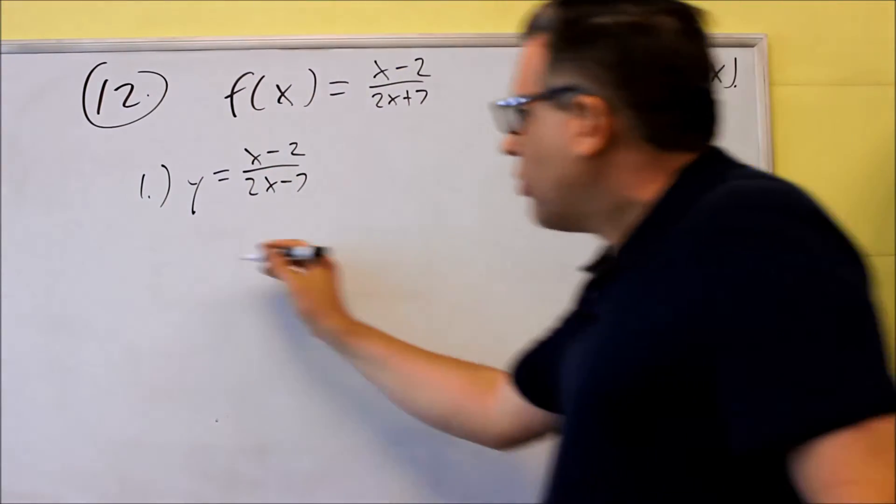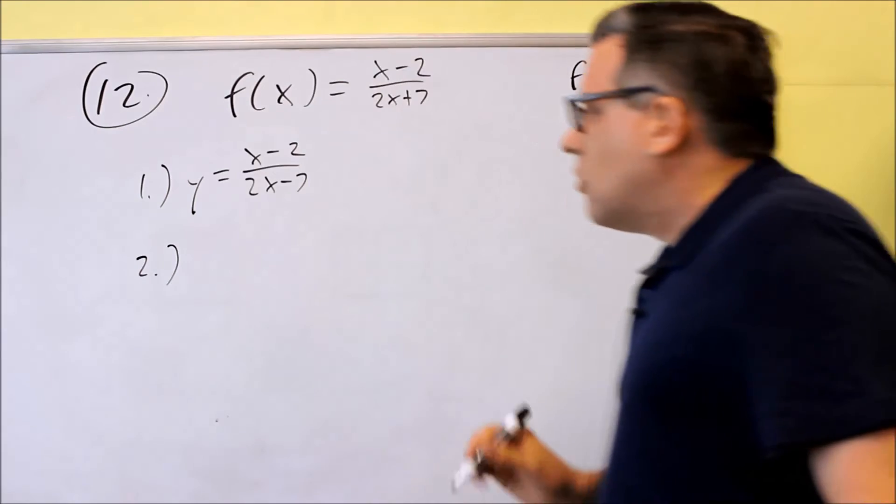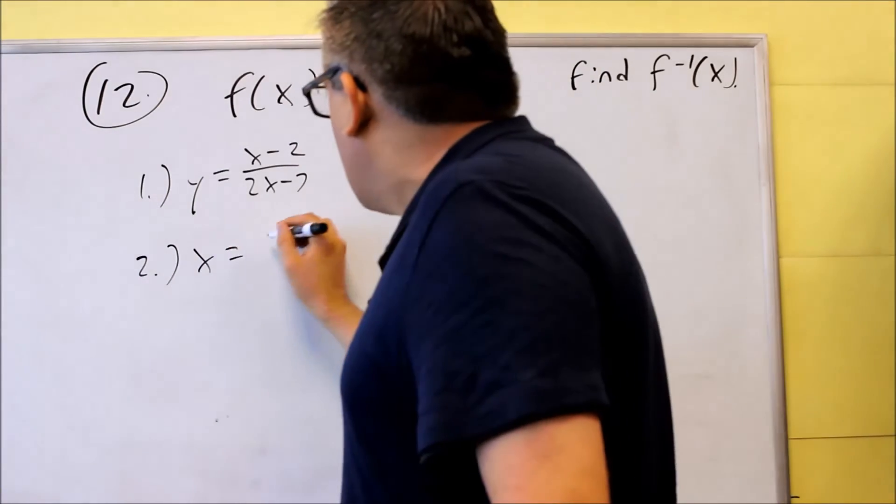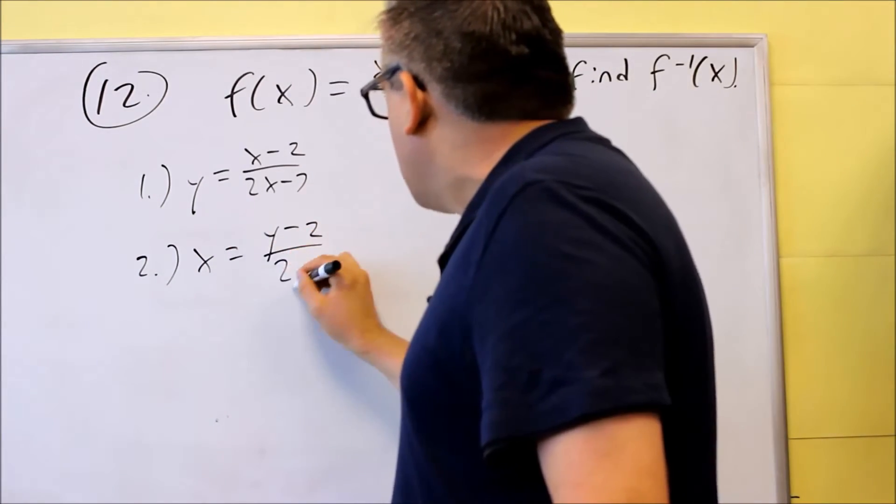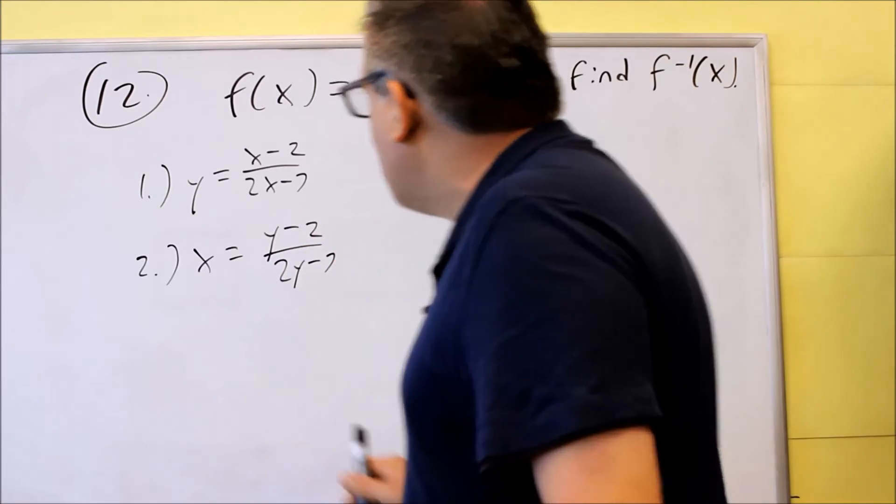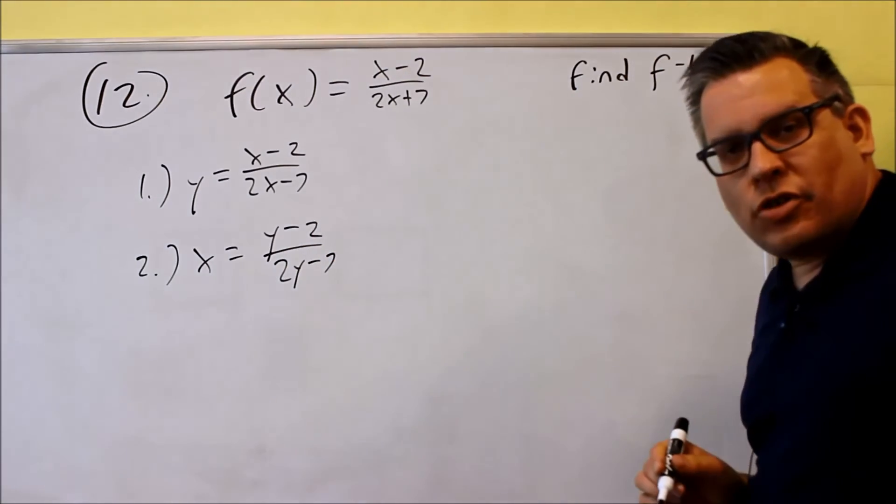Step 2, switch the x and the y. So we're going to switch the x and the y. We have x equals y minus 2 over 2y minus 7. Okay, so step 2.